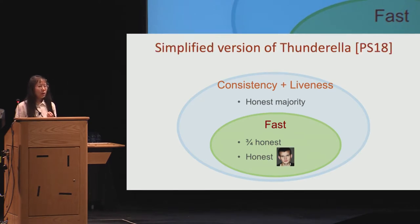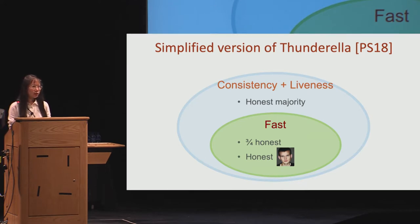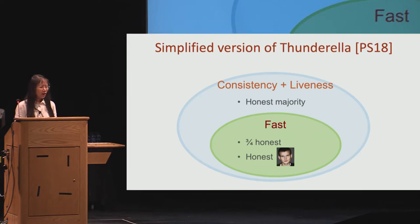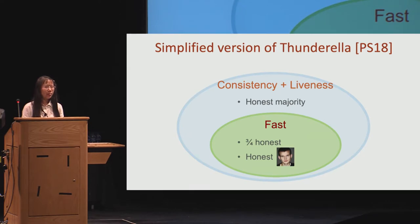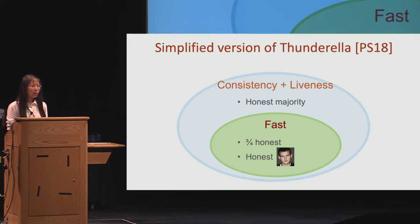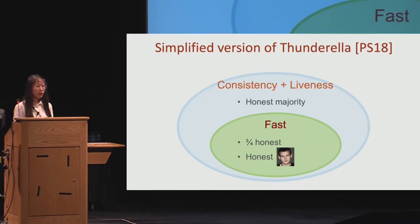The protocol I described is a simplified version of Sandoralla by Rafael Paz and Leng Shi, published at EuroGroup 2018. It is a peer-reviewed consensus protocol with rigorous mathematical proofs. However, I'm going to describe a scenario in which, with this protocol, a confirmed transaction can somehow be undone by the network, even if none of the nodes are malicious.